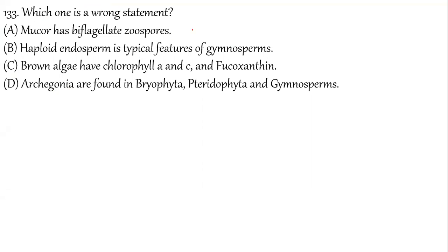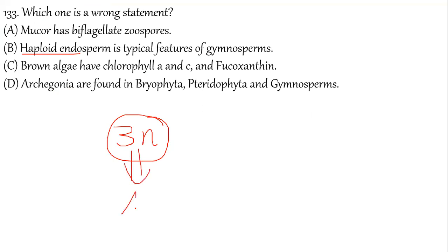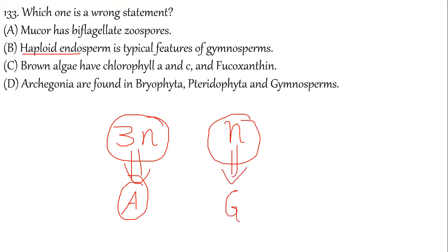Question 133: Which one is a wrong statement? In angiosperms, the endosperm is triploid in nature; in gymnosperms it is haploid — correct. Brown algae have chlorophyll A, C and fucoxanthin — correct. Archegonia present — correct. Mucor has biflagellated zoospores — that is the wrong statement. The correct answer is option A.